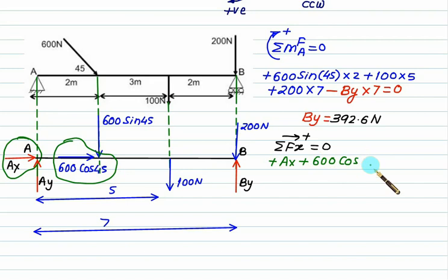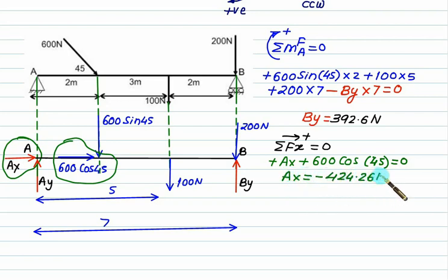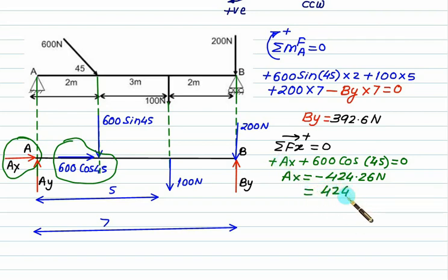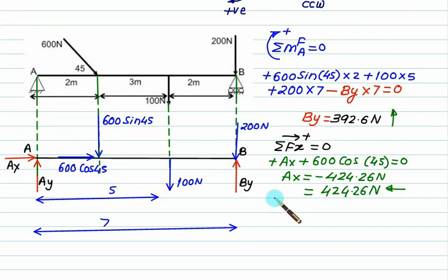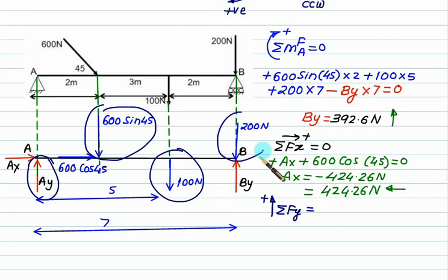Next, calculate sigma Fx = 0. Ax is positive and 600 cos 45 is positive, giving Ax = −424.26 N. Since the answer is negative, this force acts leftward. All quantities must be written as positive vector quantities; a negative answer means you follow the opposite direction. So Ax = 424.26 N acting leftward. Then apply the summation of Fy = 0: Ay + 600 sin 45 + 100 + 200 terms must equal zero.